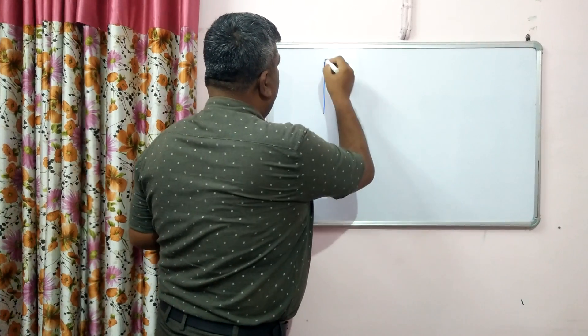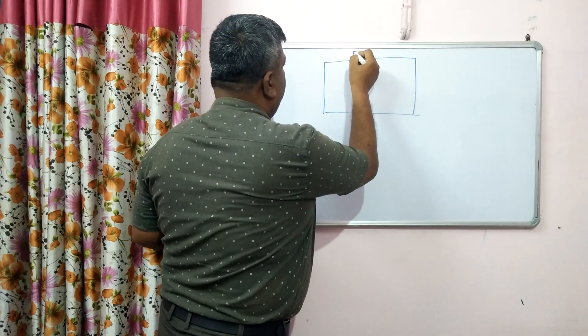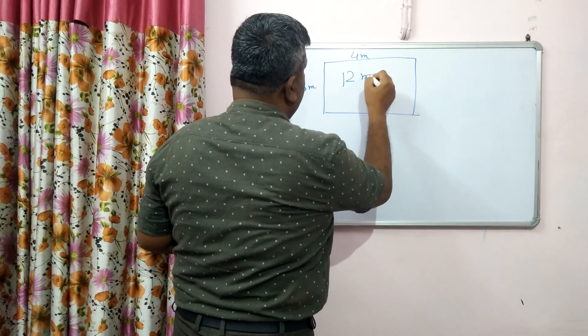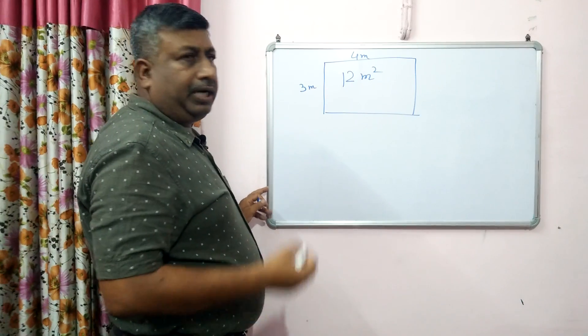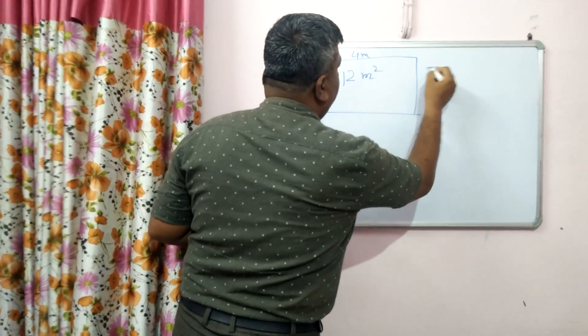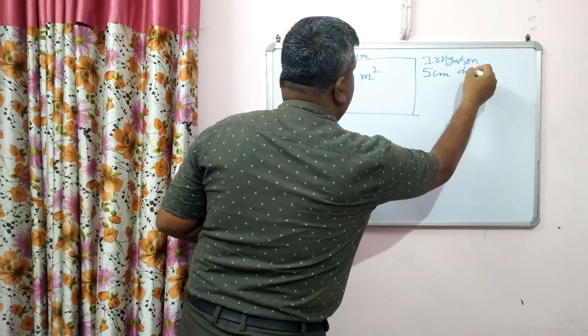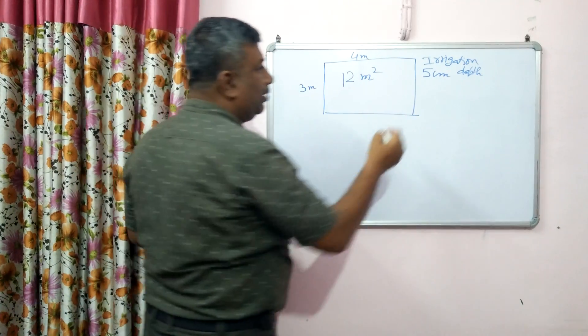In the research field, generally we make small plots and in irrigation experiments and in general experiments, we give irrigation to a certain depth. So for a small plot, how much water is required and how it is calculated, I will explain in this lecture. Suppose plot size in the experimental field is 4 by 3 meter — 4 meter is length and 3 meter is the width — and area is 12 square meter. We have to irrigate this field up to the depth of 5 centimeter, so irrigation depth is 5 centimeter.